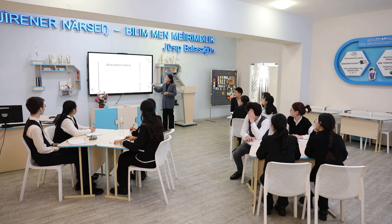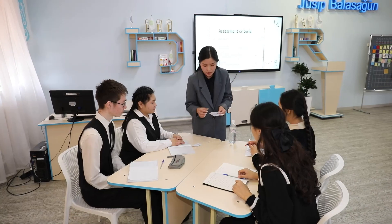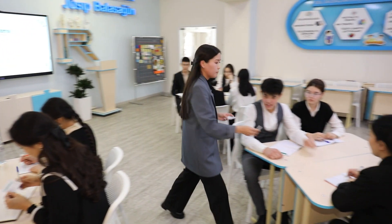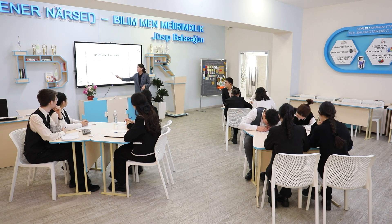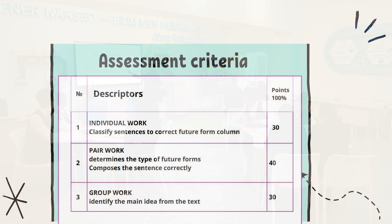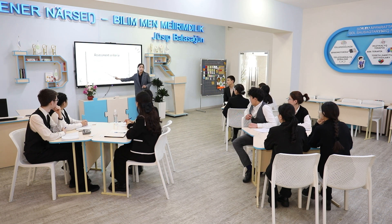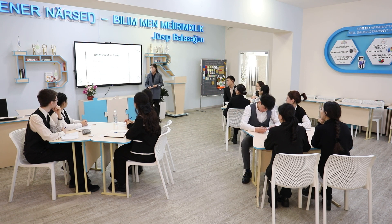This is your assessment criteria. Today you will assess yourself. I will give you the cards of assessment criteria. You should write down your name and assess after each task. The first task is individual work — classify sentences to the correct future form column, worth 30 points. The next task: determine the type of future form and compose the sentence correctly, worth 40 points. And the last group work: identify the main idea from the text, worth 30 points. Total: 100.